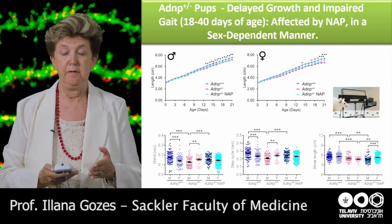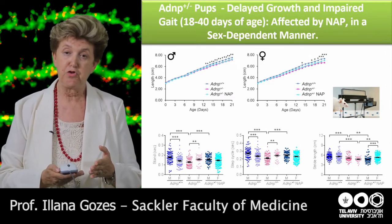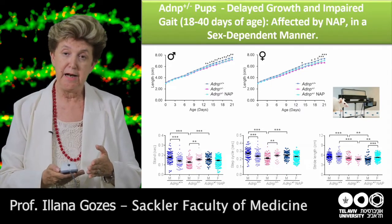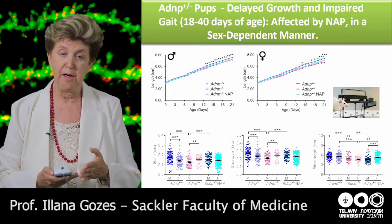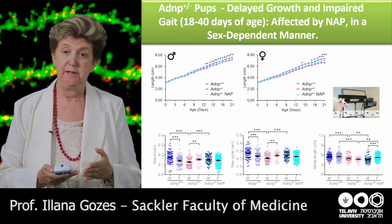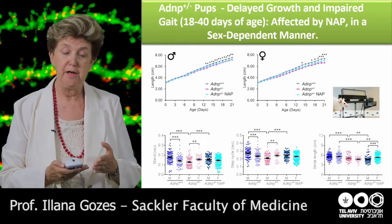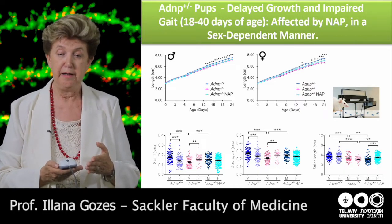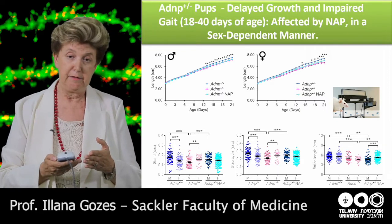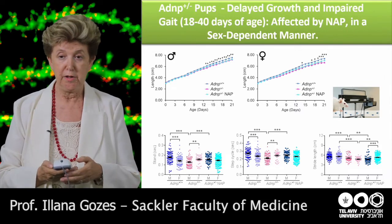Another characteristic we looked at was growth — the children are short in stature, so we looked at growth in the haploinsufficient animals, and it was delayed compared to normal animals. We also looked at gait, namely motor activities — walking of the mouse — which is delayed in ADNP children. The haploinsufficient animals, especially the males, showed delays in gait and slower gait, for example in step cycle and stride length. When we treated with NAPVSIPQ, we corrected it.